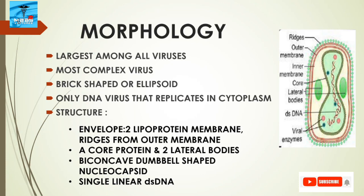Regarding the morphology of poxviruses, they are the largest and most complex among all viruses because their structure does not fit into either icosahedral or helical symmetry. They are brick-shaped or ellipsoidal in shape. Externally there is an envelope made up of two lipoprotein membranes, outer and inner, with ridges arising from the outer membrane.